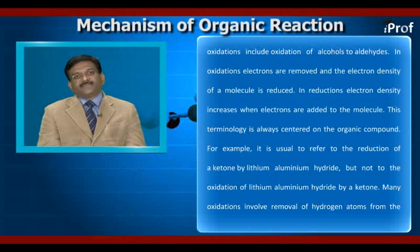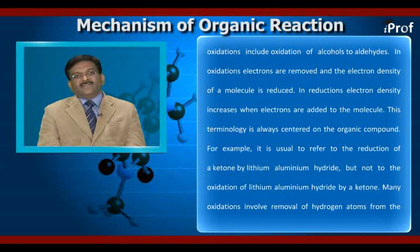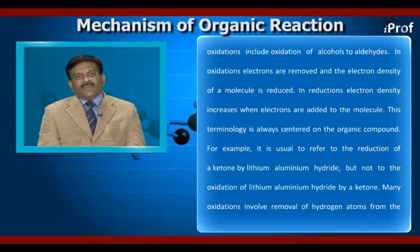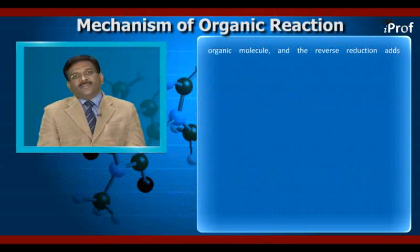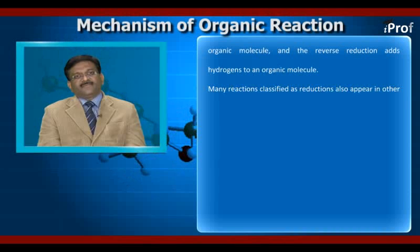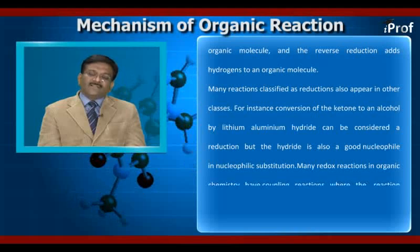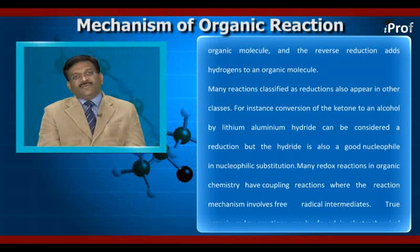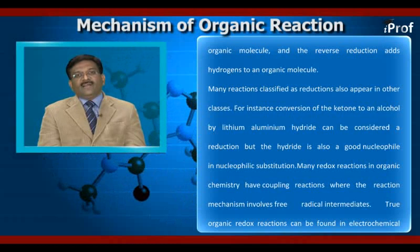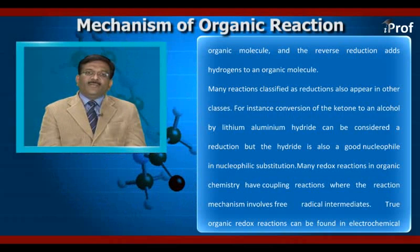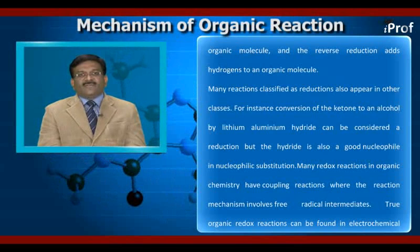This terminology is always centered on the organic compound. For example, it is usual to refer to the reduction of a ketone by lithium aluminum hydride. Many oxidations involve removal of hydrogen atoms from organic molecules, and the reverse reduction adds hydrogens to an organic molecule. For instance, conversion of a ketone to an alcohol by lithium aluminum hydride can be considered a reduction, but hydride is also a good nucleophile in nucleophilic substitution. Methane is oxidized to carbon dioxide because the oxidation number changes from minus 4 to plus 4. Classical reductions include alkene reduction to alkanes and classical oxidations include oxidation of alcohols to aldehydes.